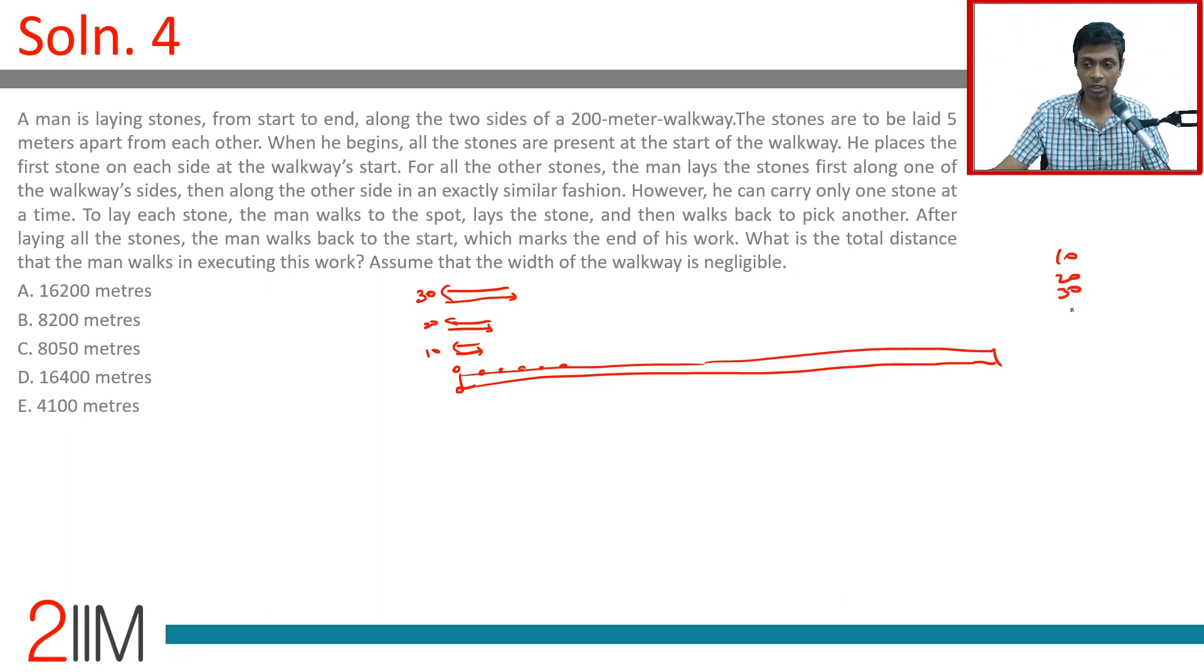All the way till 200 plus 200. So, 10, 20, 30, all the way till 400. This is the distance he travels, laying all the stones on one side of the walkway. Or, 10 times, 1 plus 2 plus 3, all the way till 40. 10 times, 40 into 41 by 2.